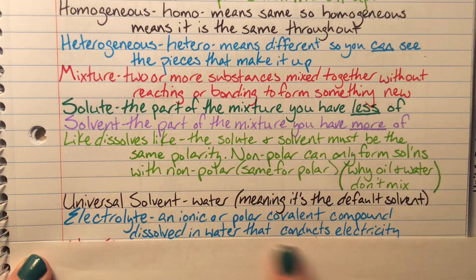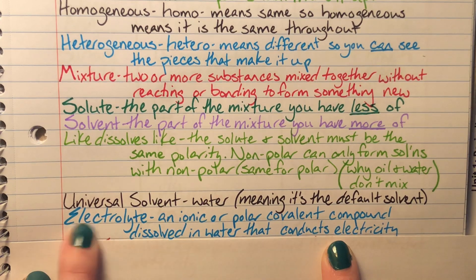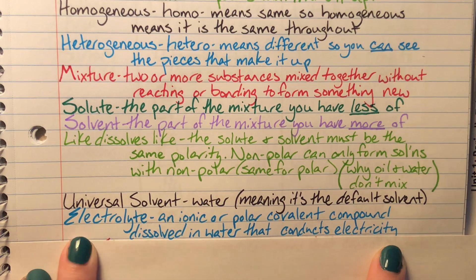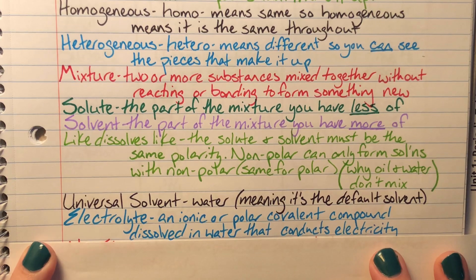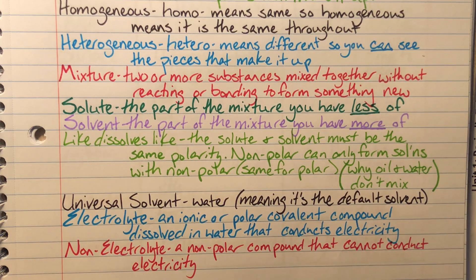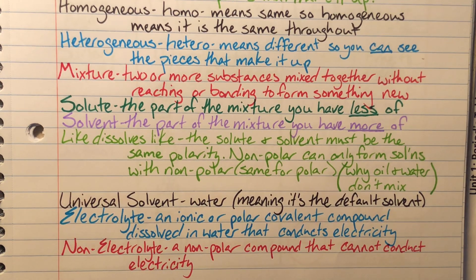So my electrolyte can conduct electricity. So you can see the electro part in electricity and electrolyte are the same, so you can kind of remember it that way, that electrolytes conduct electricity. The opposite of an electrolyte would be a non-electrolyte, and non-electrolytes are generally nonpolar compounds, and they cannot conduct electricity.